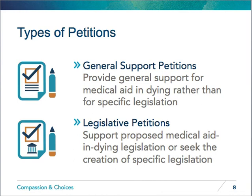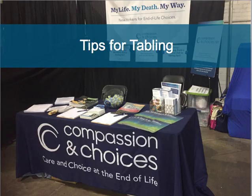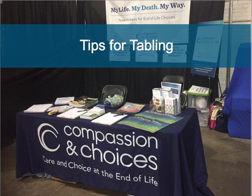A carefully presented table with clipboards and handouts gives important brand visibility to Compassion and Choices and the end-of-life options movement. Examples of events where you can have an impact by tabling include senior fairs, farmers markets, in front of grocery stores, or other places where people gather. One of my colleagues, Joe Barnes, was tabling in support of end-of-life option legislation at the West Hollywood farmers market in California with two other volunteers.